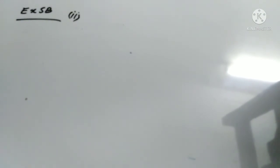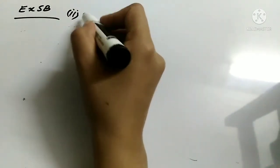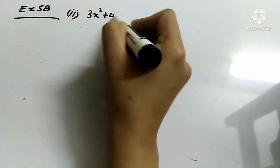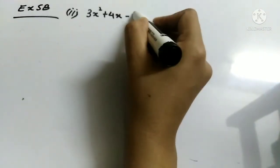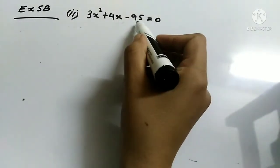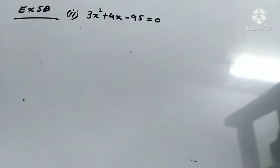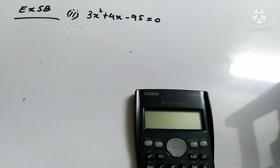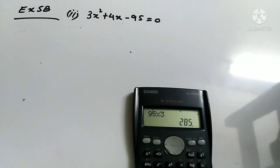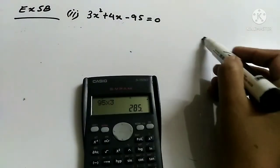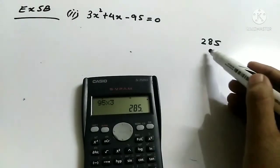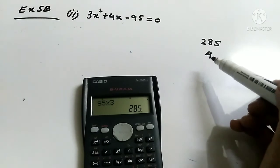Now for Part 2, we solve the equation 3x² + 4x − 95 = 0 by factorizing. Multiply 95 by 3 to get 285. We need to find two factors of 285 such that when multiplied they give 285 and when their difference gives the middle term 4.